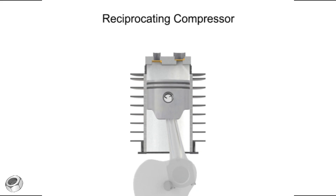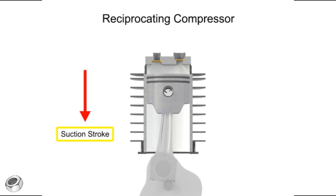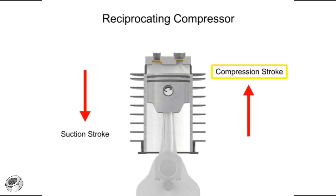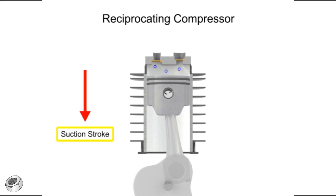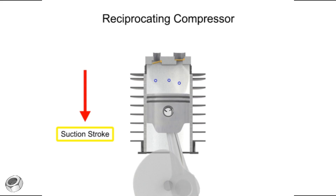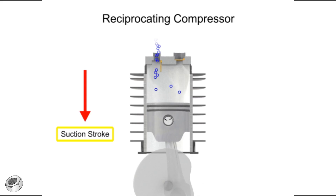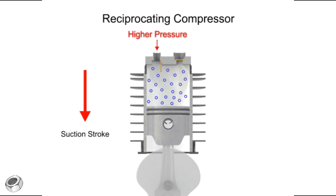The downward stroke of the piston is called the suction stroke. The upward stroke is called the compression stroke. As the piston moves downward on its suction stroke, the volume increases within the cylinder. As the volume increases, the pressure within the cylinder becomes lower than the inlet air pressure, allowing the higher pressure outside air to push open the inlet valve and allow more air into the cylinder.